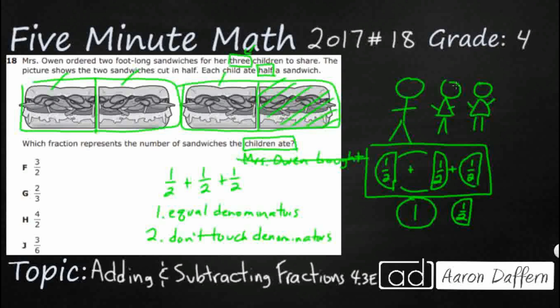So what we do is add straight across the numerators: one plus one plus one makes three, because there are three portions. But we don't touch the denominator — two plus two plus two stays two. These don't suddenly become sixths just because you added them up. I've got three halves, and three halves is equal to one and a half. These two are equal: one is an improper fraction and one is a mixed number. That is the number of sandwiches the children ate.